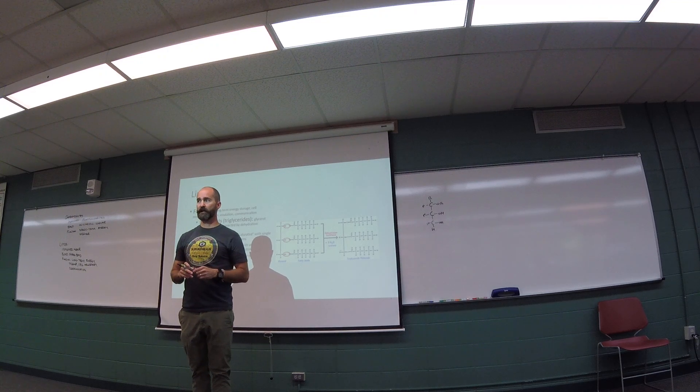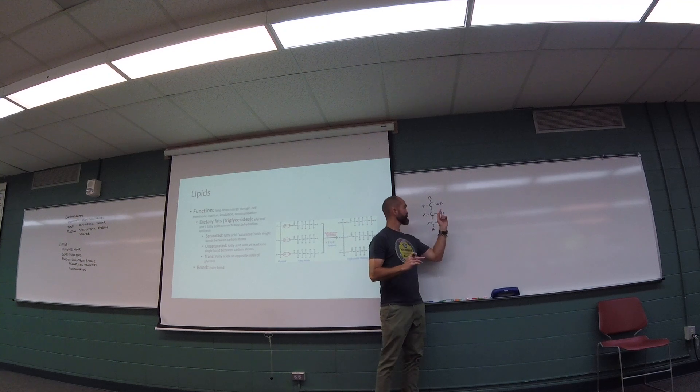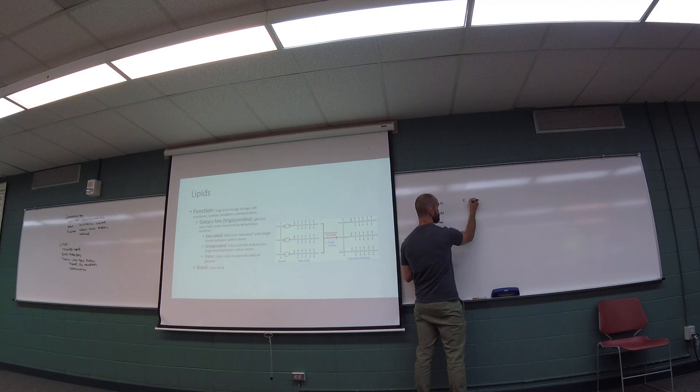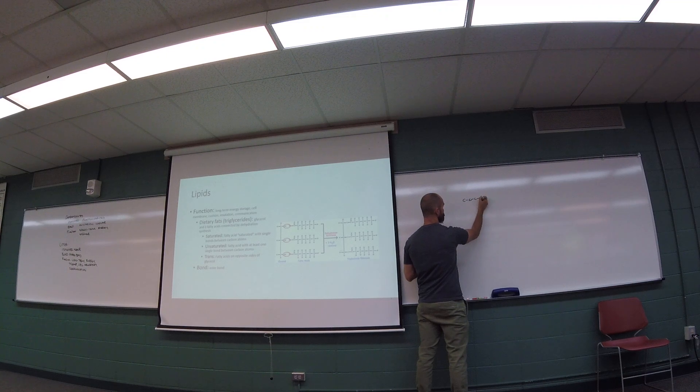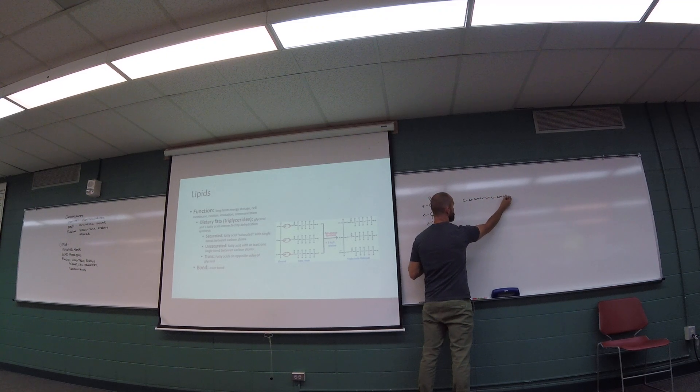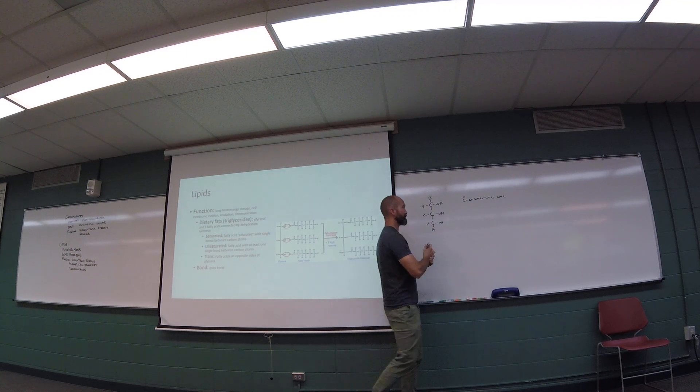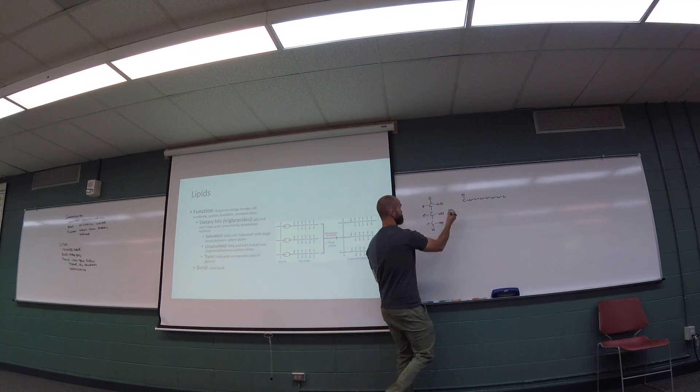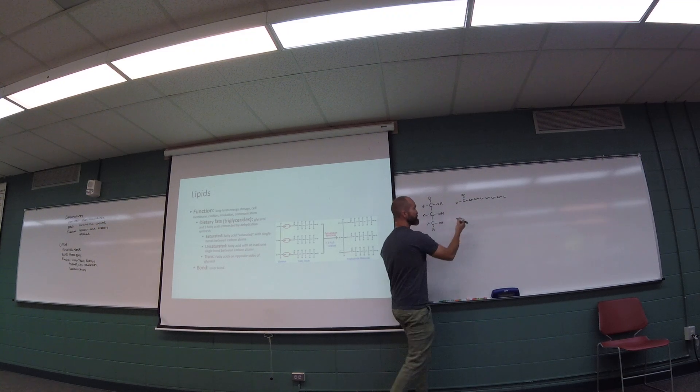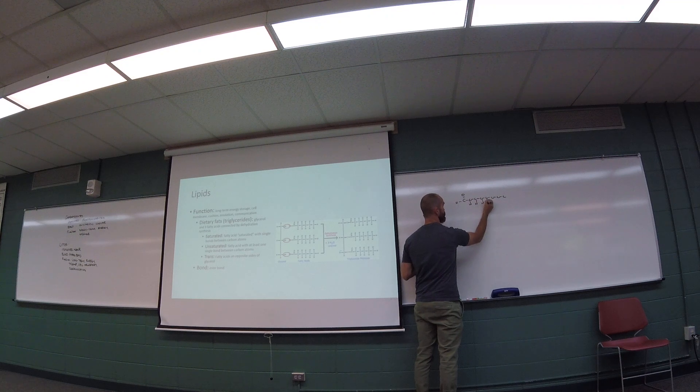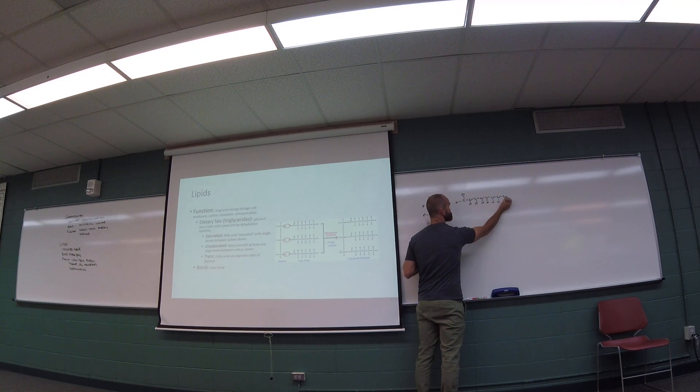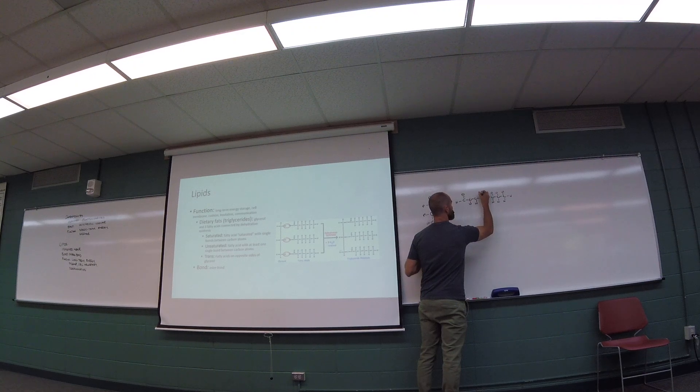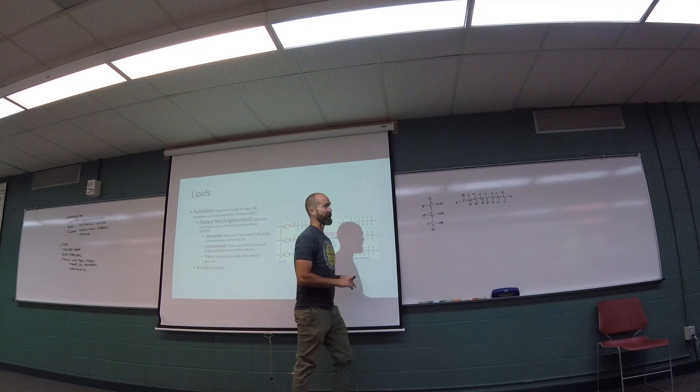And then what we do is we attach each of those carbons to something called a fatty acid chain. And fatty acid chains look like this. They're long chains of carbons. And this terminal carbon is double bonded to an oxygen and then a hydrogen. And then each of these carbons is attached to a hydrogen. So that's what a fatty acid chain looks like. These are both really inert substances. They don't dissolve in water at all. They're not polar in the least.